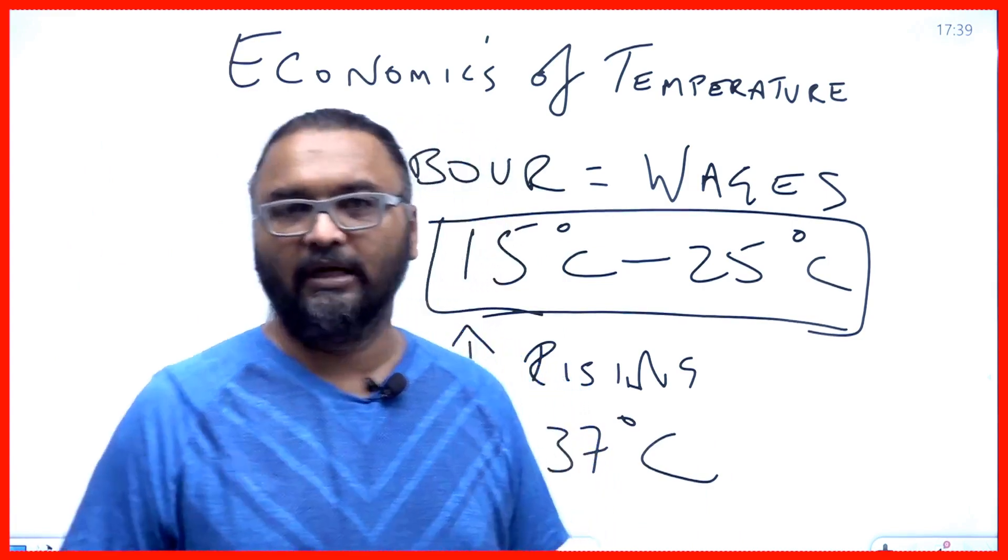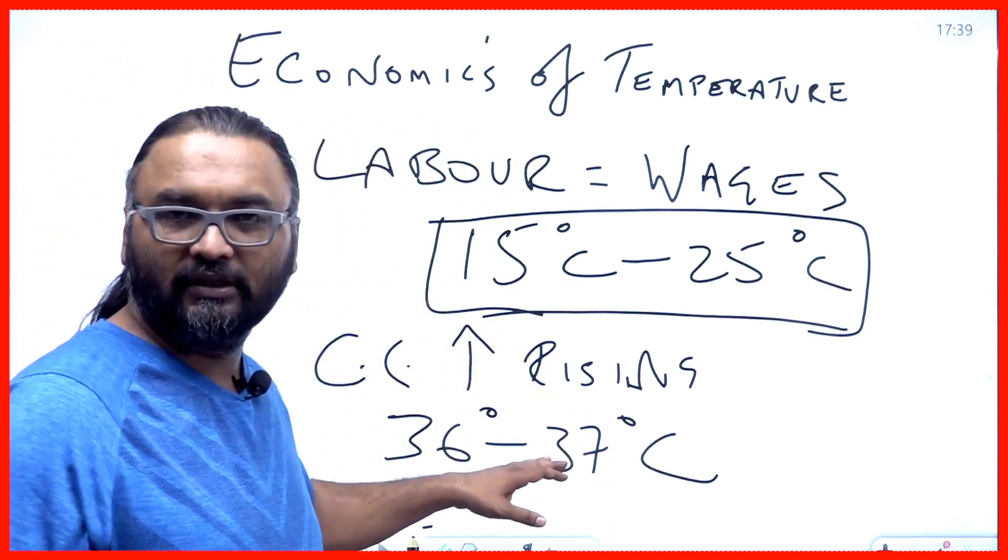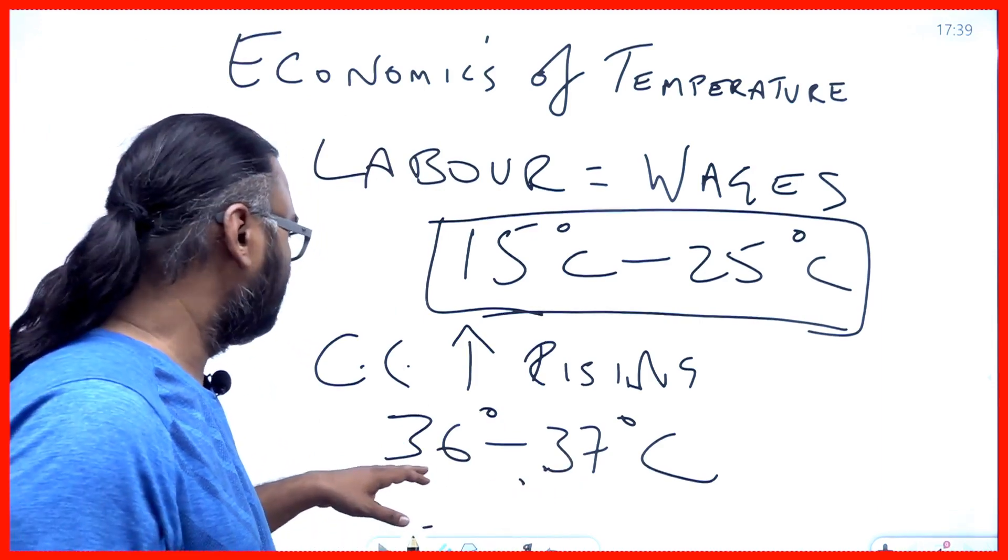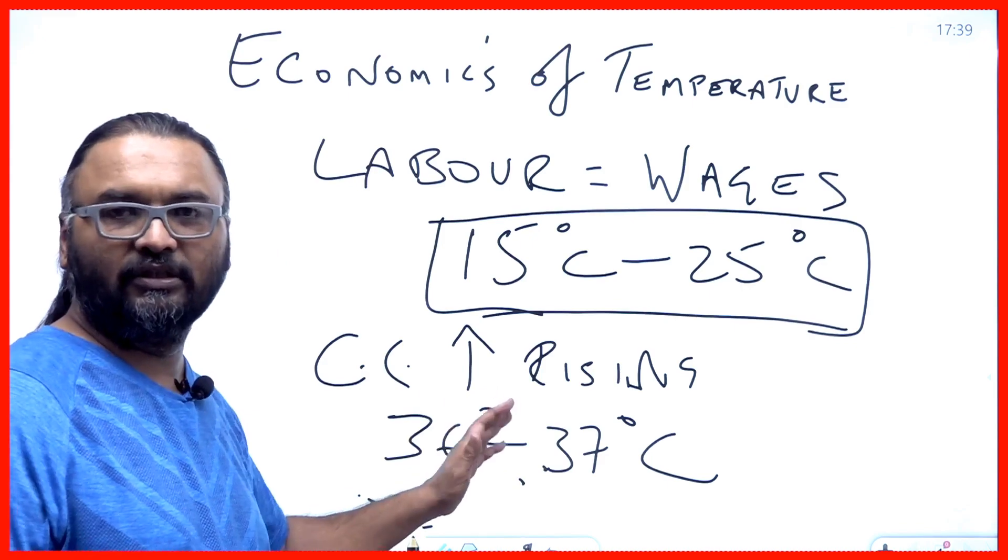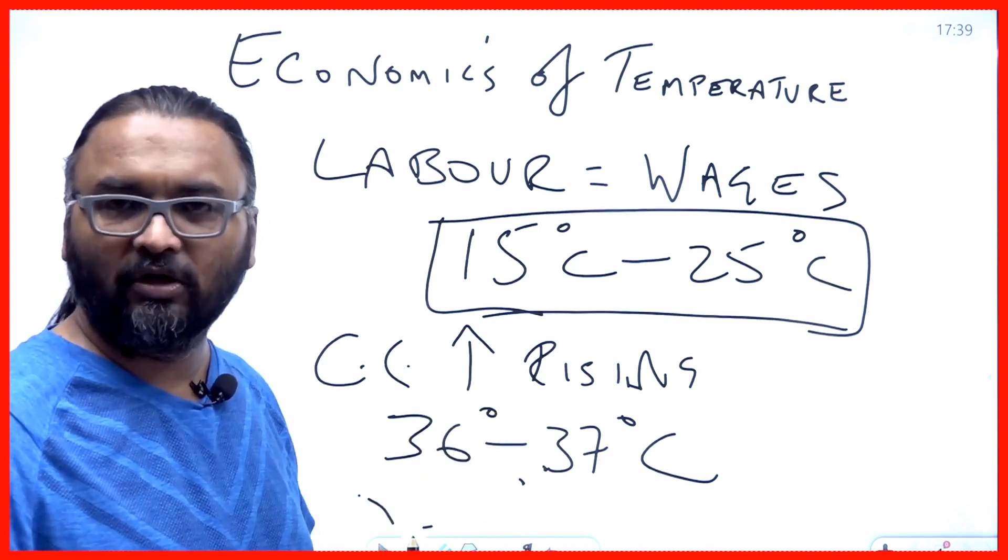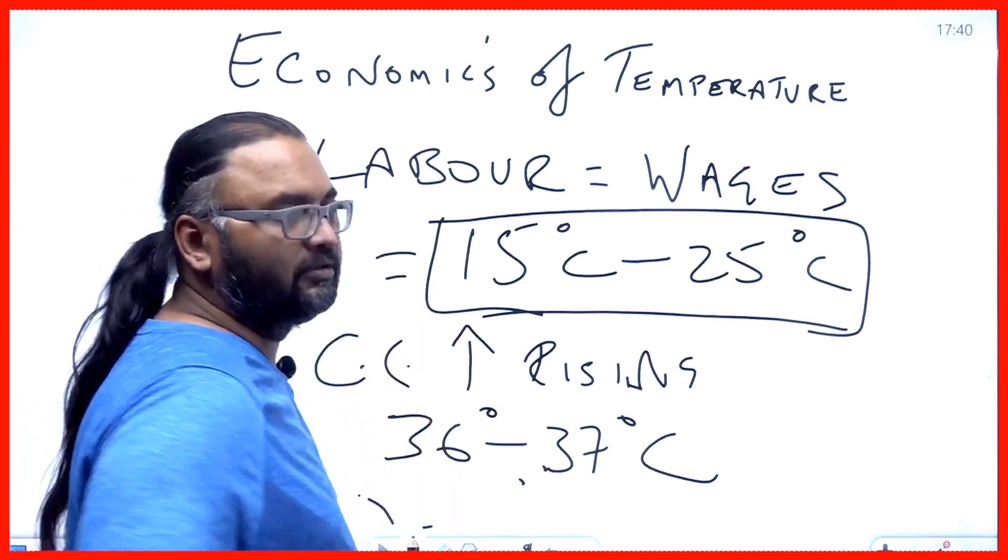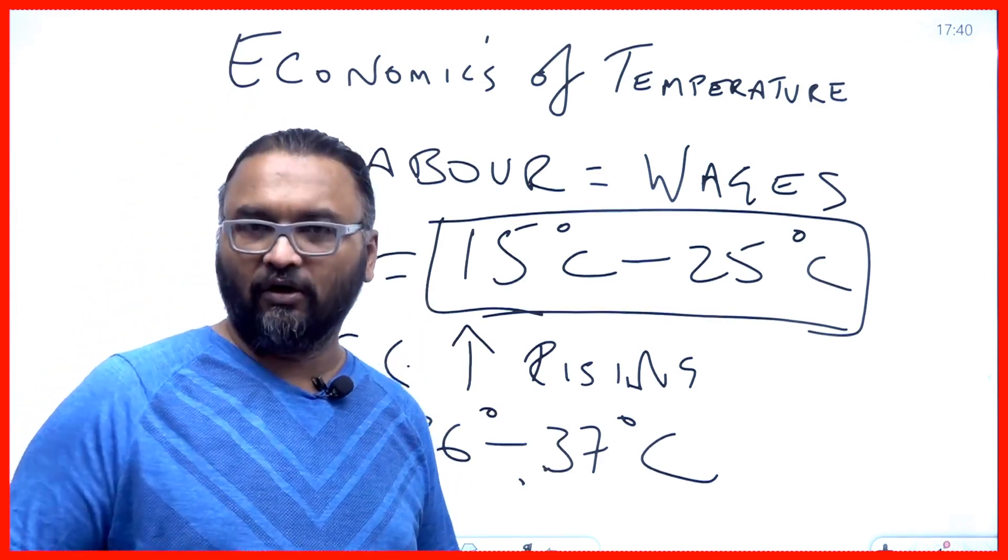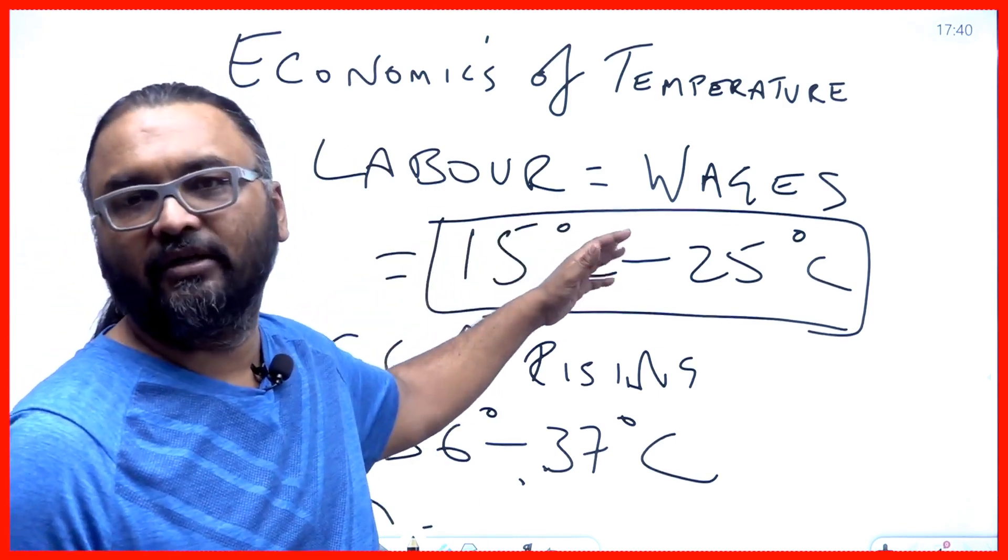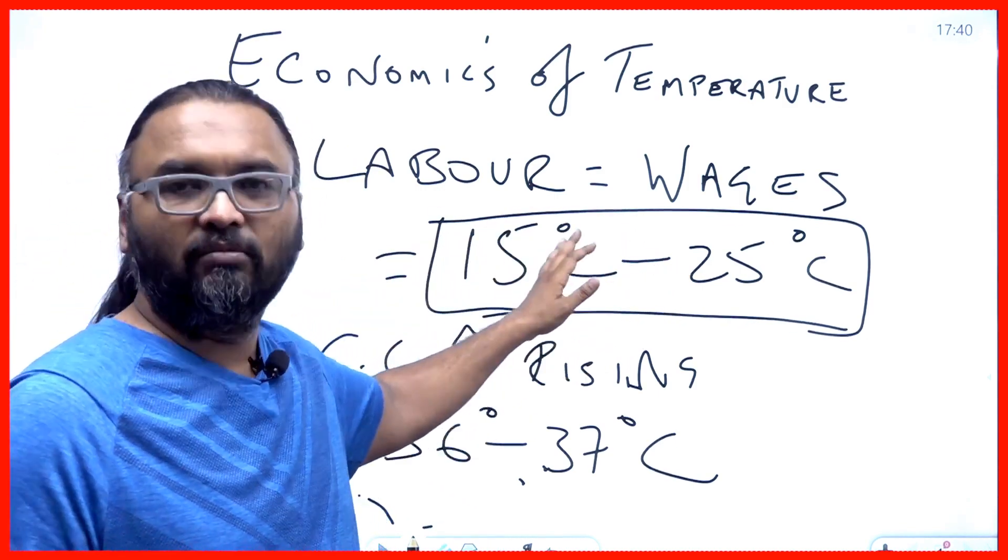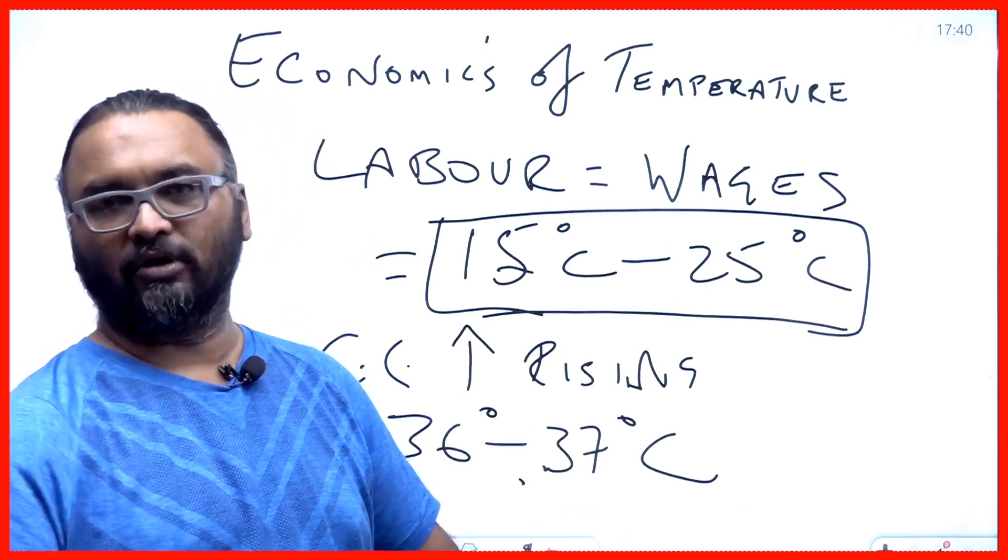If you take the temperature of somebody's mind, brain, head, it is normally in the range of about 37 degrees centigrade. If you take the body temperature, it lies between 36 to 37 degrees centigrade. This is how the human body functions. At this temperature, when the human body is cooling off or there is perspiration, the perspiration is very easily whipped away by the atmosphere. Between this temperature, you generally do not perspire too much and you are at your productive best.